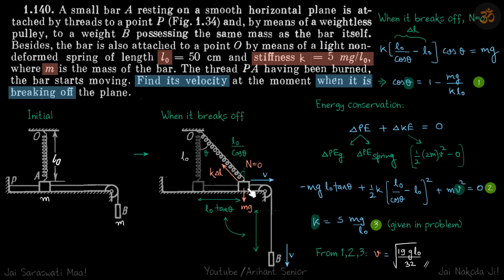Between this point and this, delta PE plus delta KE is zero. Delta PE will be due to gravity and due to spring, and delta KE is final kinetic energy minus initial kinetic energy. So initially it was at rest; finally both the blocks A and B are moving with the velocity v.